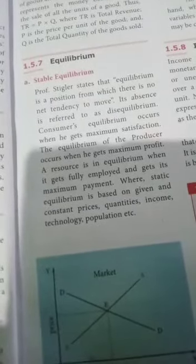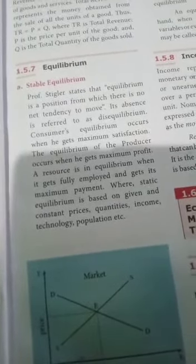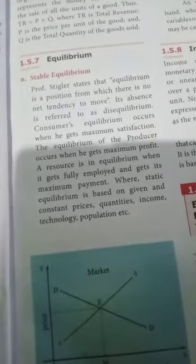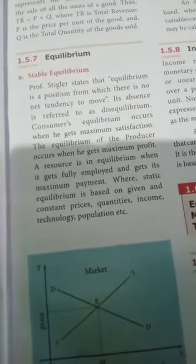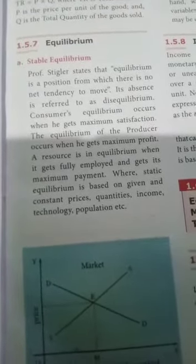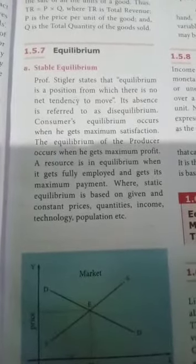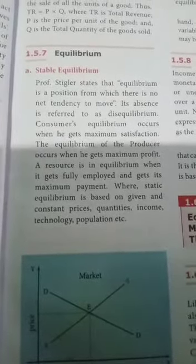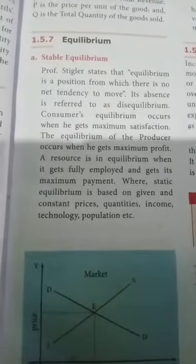Stigler states that equilibrium is a position from which there is no tendency to move. Its absence is referred to as disequilibrium. Consumer equilibrium occurs when he gets maximum satisfaction. The equilibrium of the producer occurs when he gets maximum profit.